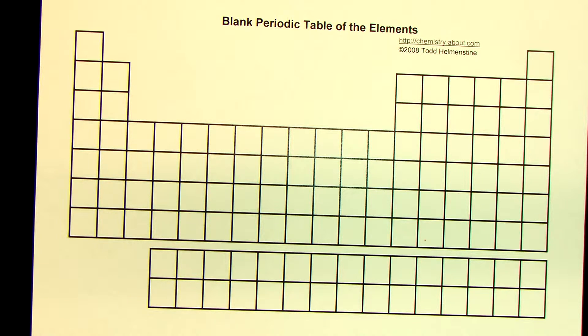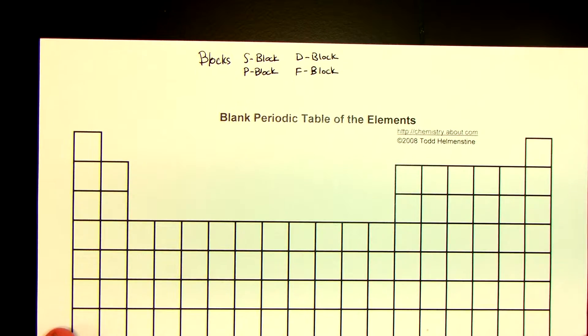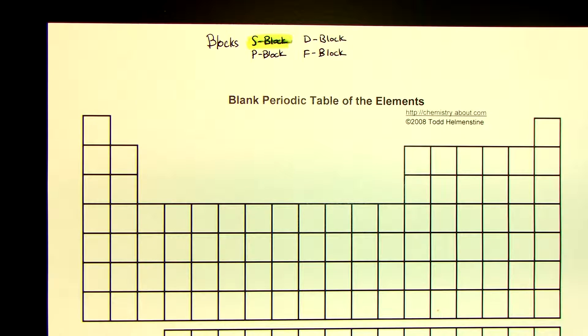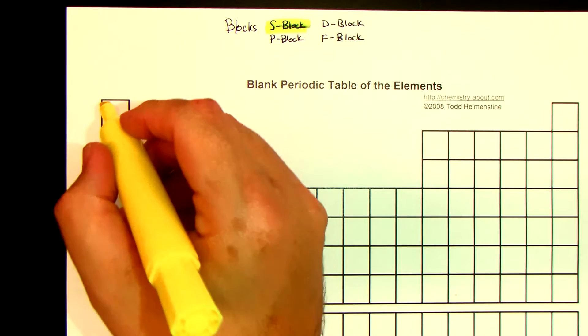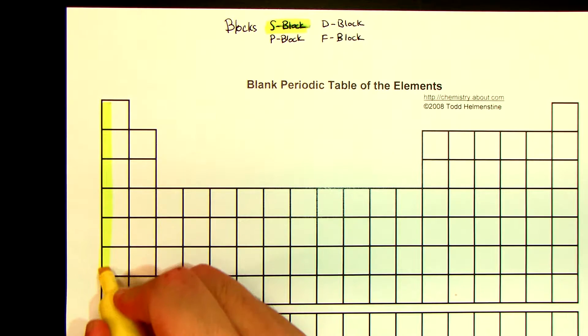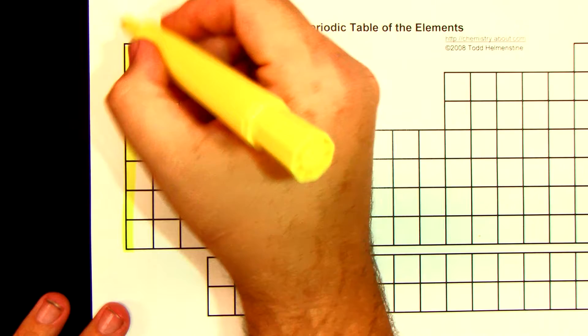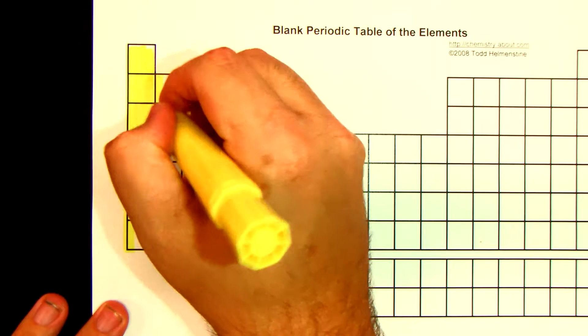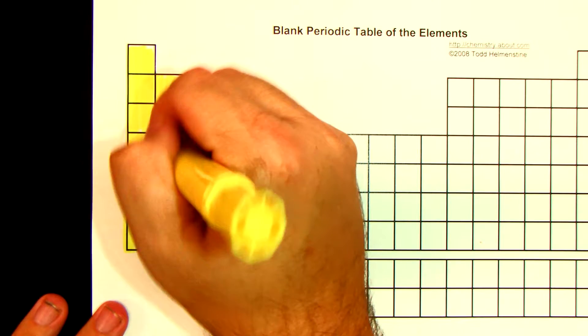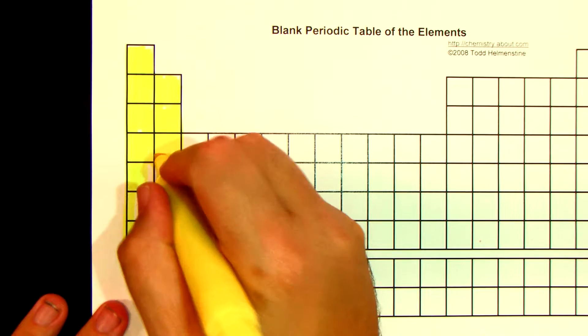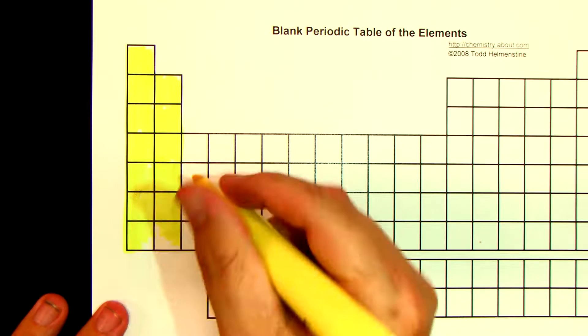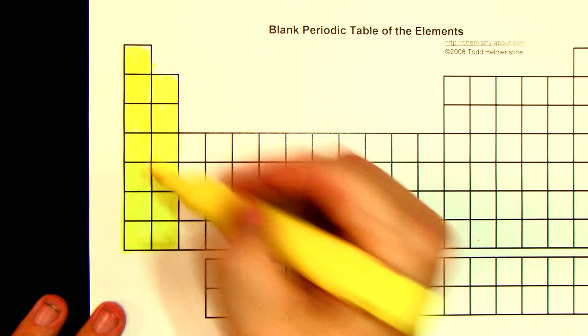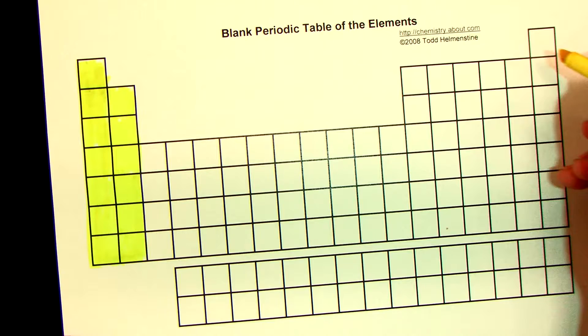But first off, what I want to do is I want to take the S block. And we're going to start with the S block. And I'm going to highlight the S block in yellow. And the S block in yellow is here. It's the first two columns. So if you don't want to ruin your... Well, this is the best way to do it. Just highlight those.